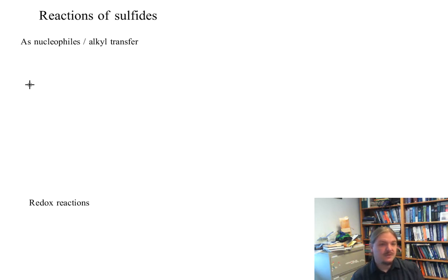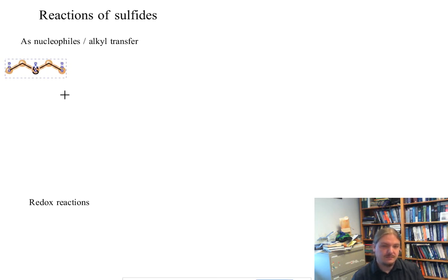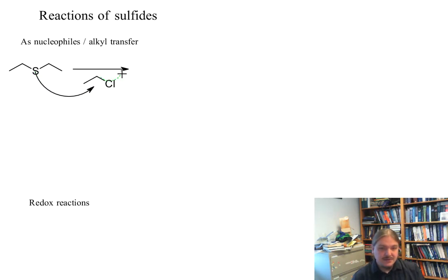So first, a really interesting property of sulfides in comparison to ethers is that sulfides are still really pretty good nucleophiles and so can be convinced to undergo further alkylation to form these trialkyl sulfonium compounds.